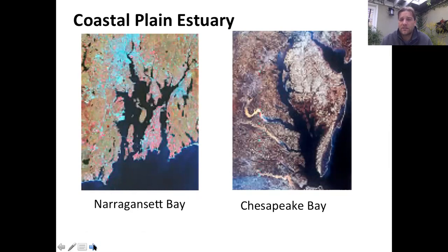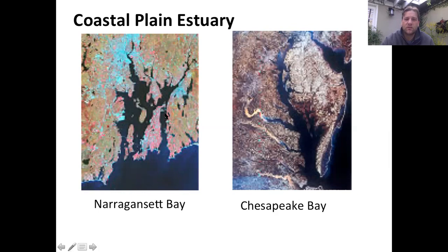In our lab class we're going to be investigating more details about the Chesapeake Bay. As you take a look over here, you can see all kinds of different tributaries of smaller streams and rivers connecting into the Chesapeake Bay. You've got the Nanserat Bay here as well. Overall, the coastal plain estuary has a lot of different fingers as you're progressing back towards the river systems.